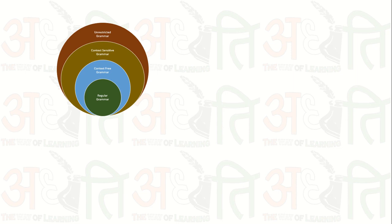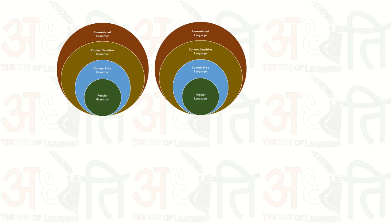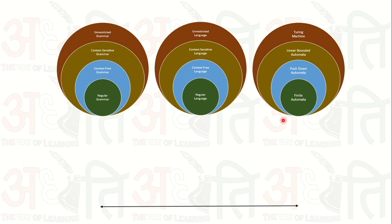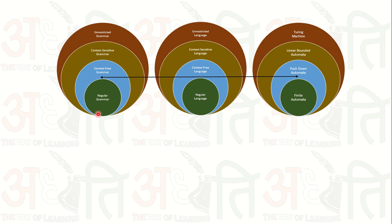In TOC, we have the terms: grammar, language, and automata. There are four types of grammar — type 0, type 1, type 2, and type 3. The lower level is type 3, simply known as regular grammar. This grammar generates the language known as regular language, and this regular language is accepted or rejected by the automata simply known as finite automata.